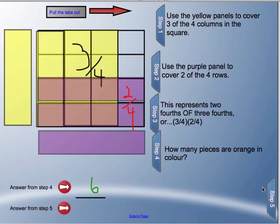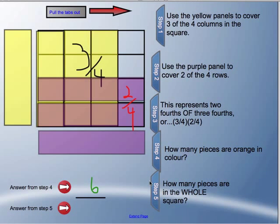And then step five asks me how many pieces are in the whole square. So each of these little pieces counts as a part of that whole. So I could count them all up, or I could say it's four times four. So all together here I've actually got sixteen different pieces in that whole.